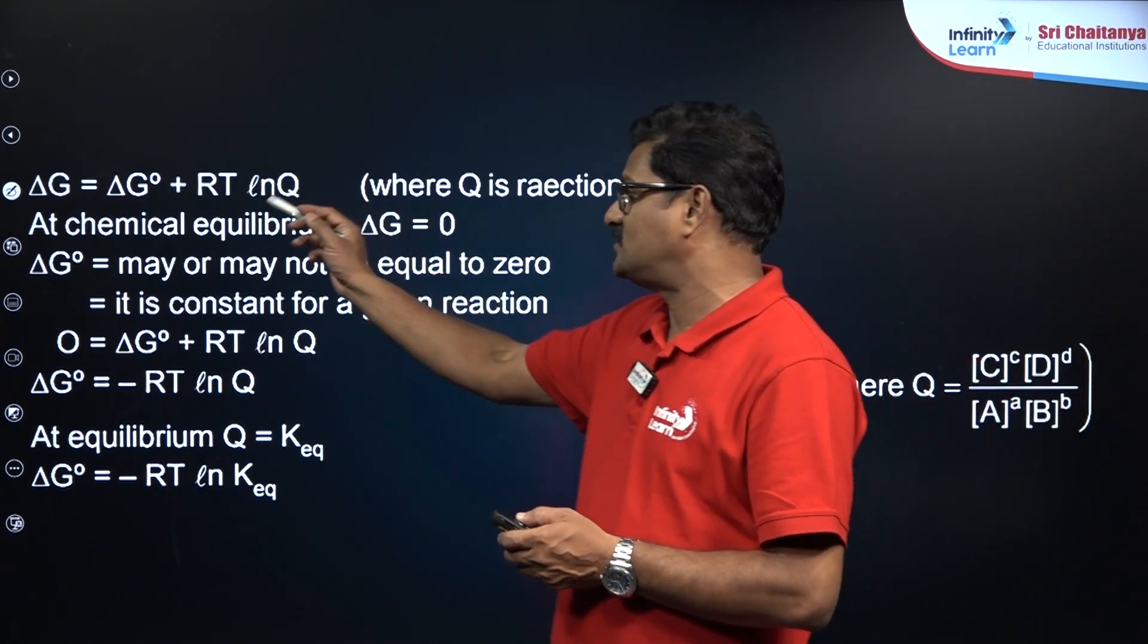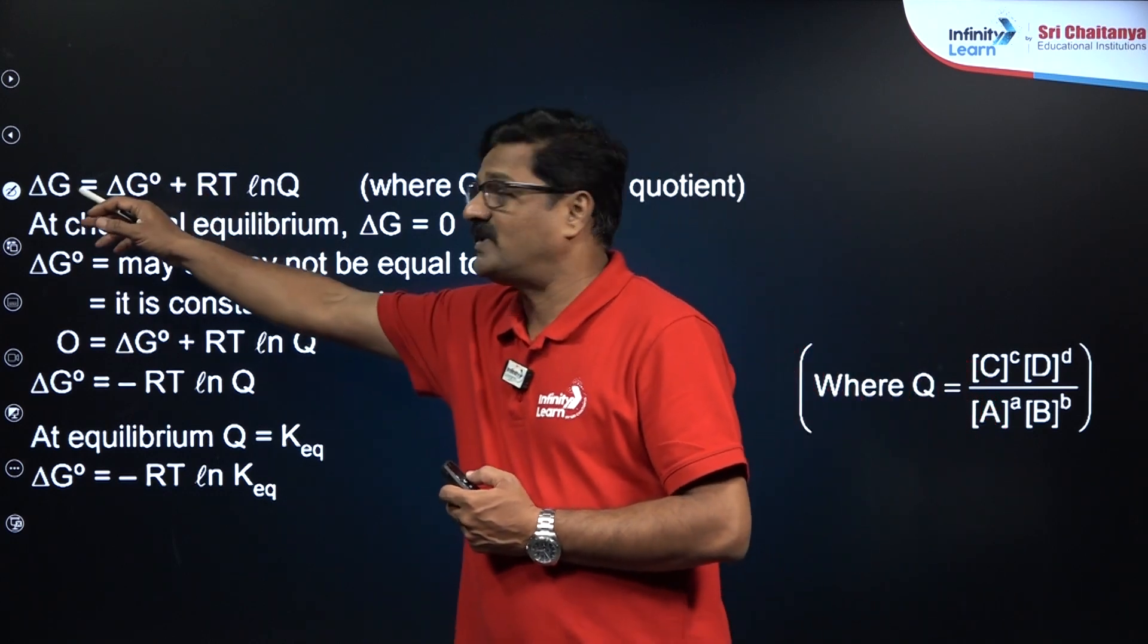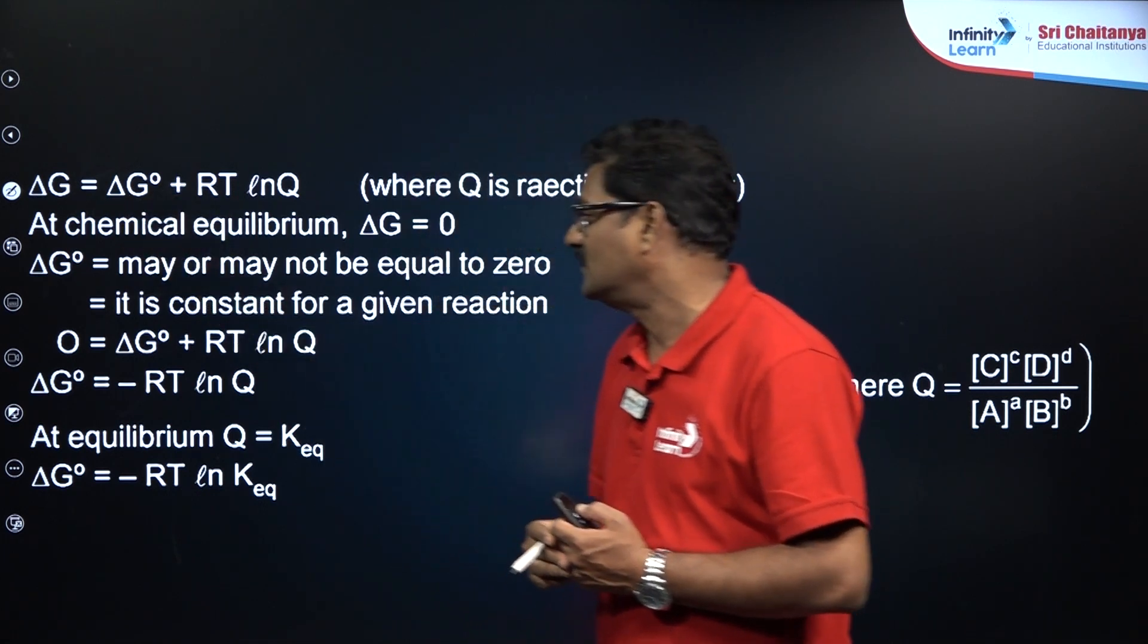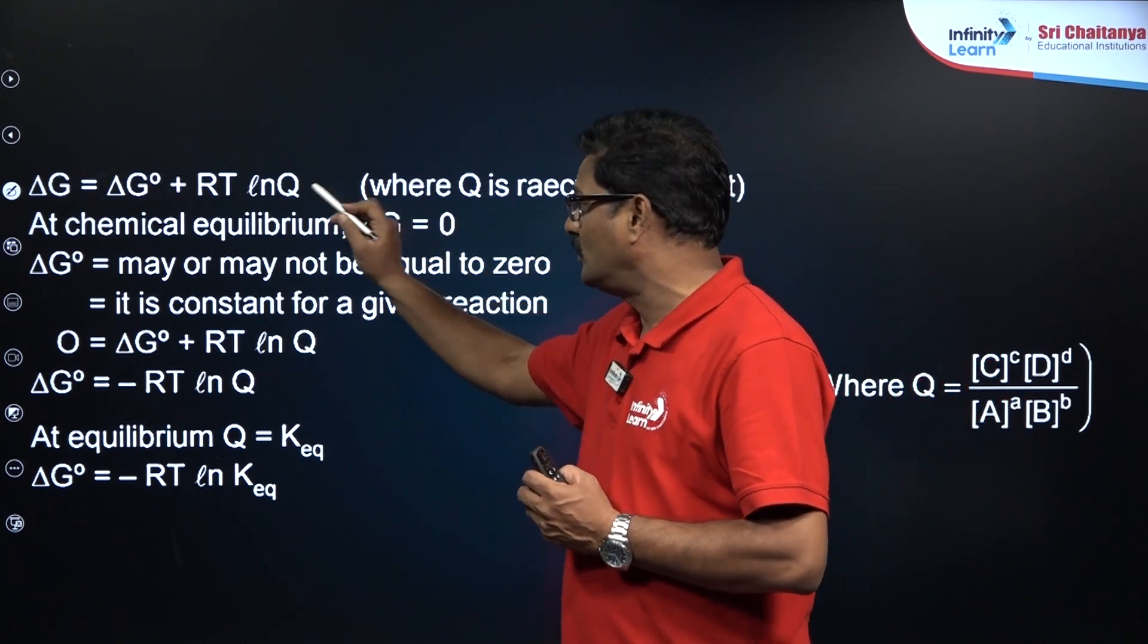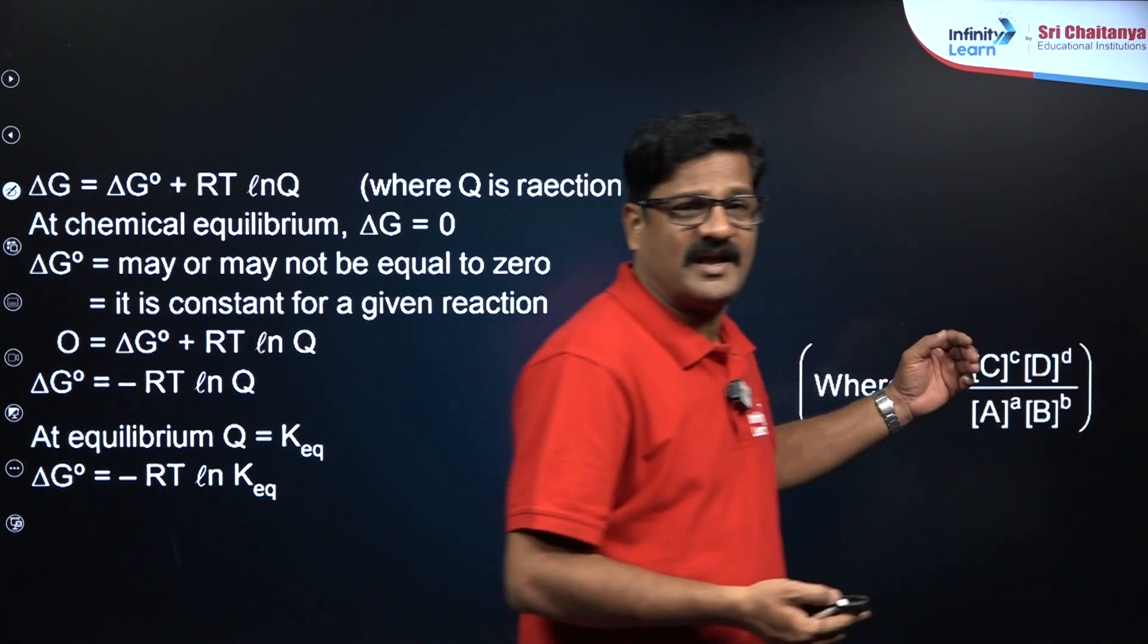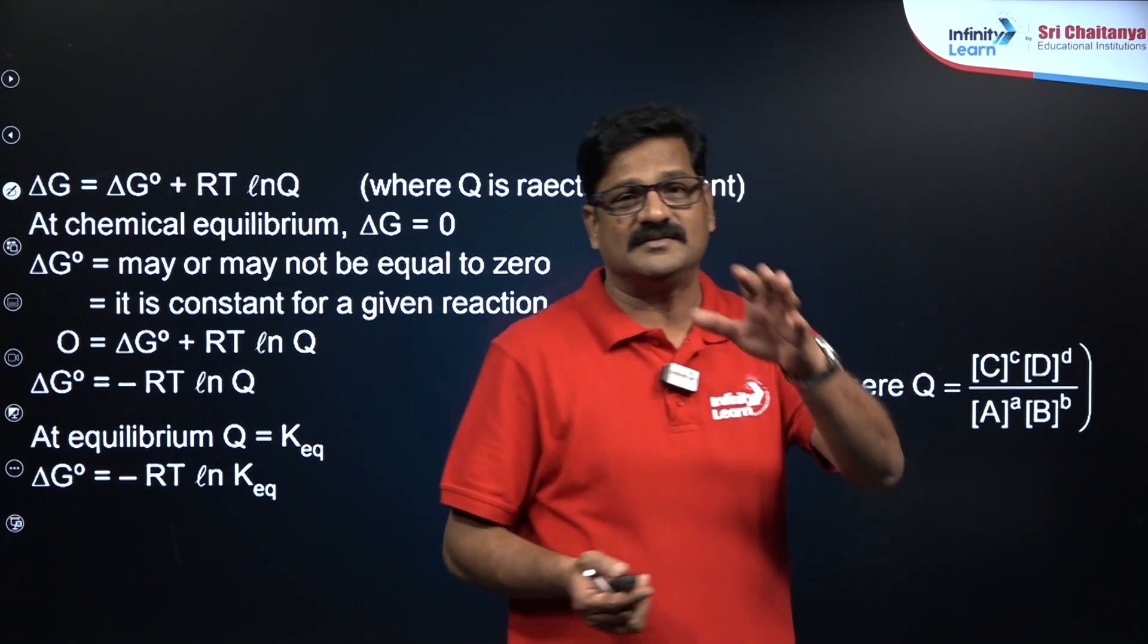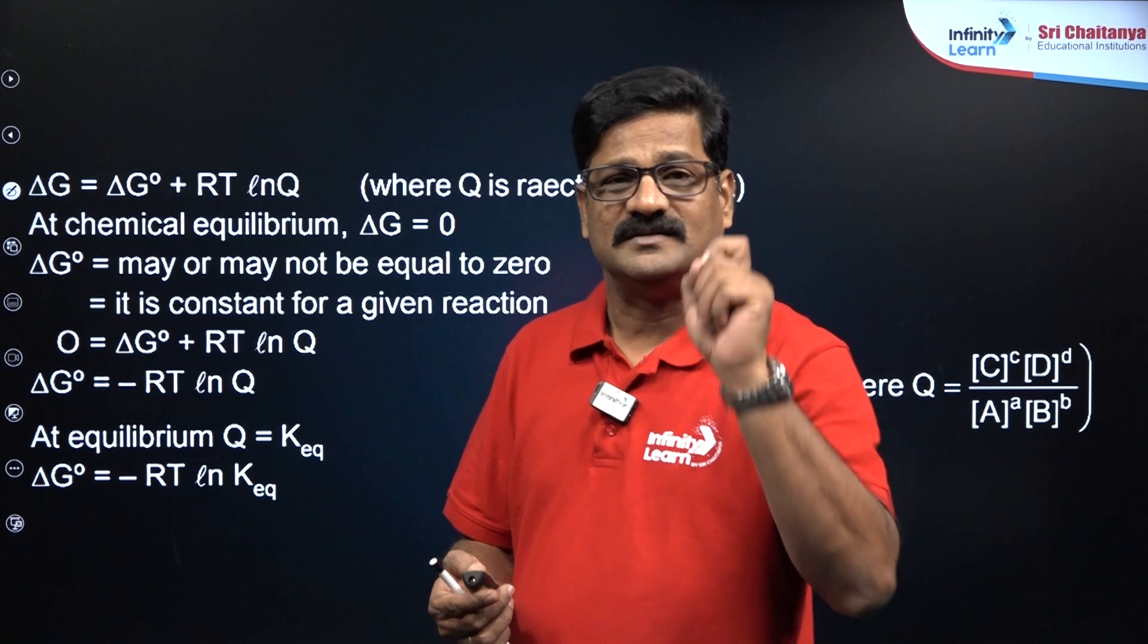Delta G equals delta G naught plus RT ln Q, where Q is reaction quotient. Gibbs free energy change at conditions and the standard Gibbs free energy change means it is at standard conditions. At equilibrium, Q is going to be K_eq, and K_eq as you know for a reaction A plus B gives C plus D, CD upon AB active mass is said to be Q. When the state of equilibrium is there, Q becomes K_c, then delta G is going to be zero, and that state is said to be equilibrium.